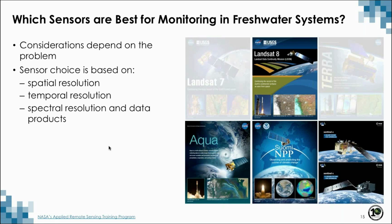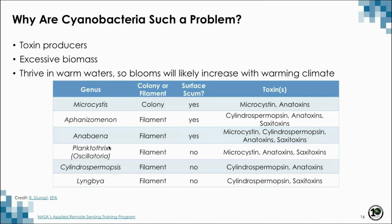Why are cyanobacteria such a problem? Cyanobacteria can produce toxins, produce blooms of extremely high cell density that suck up oxygen, and they thrive in warmer temperatures. So as climate changes and water temperatures increase, cyanobacterial blooms will continue to rise. Please take a moment to look at the table below, adapted from a previous ARSET webinar from a presentation by Richard Stumpf. Moving from the left column to the right, you see a list of culprit cyanobacteria genera, whether they form colonies or filaments, if they form surface scums, and which toxins they might produce.